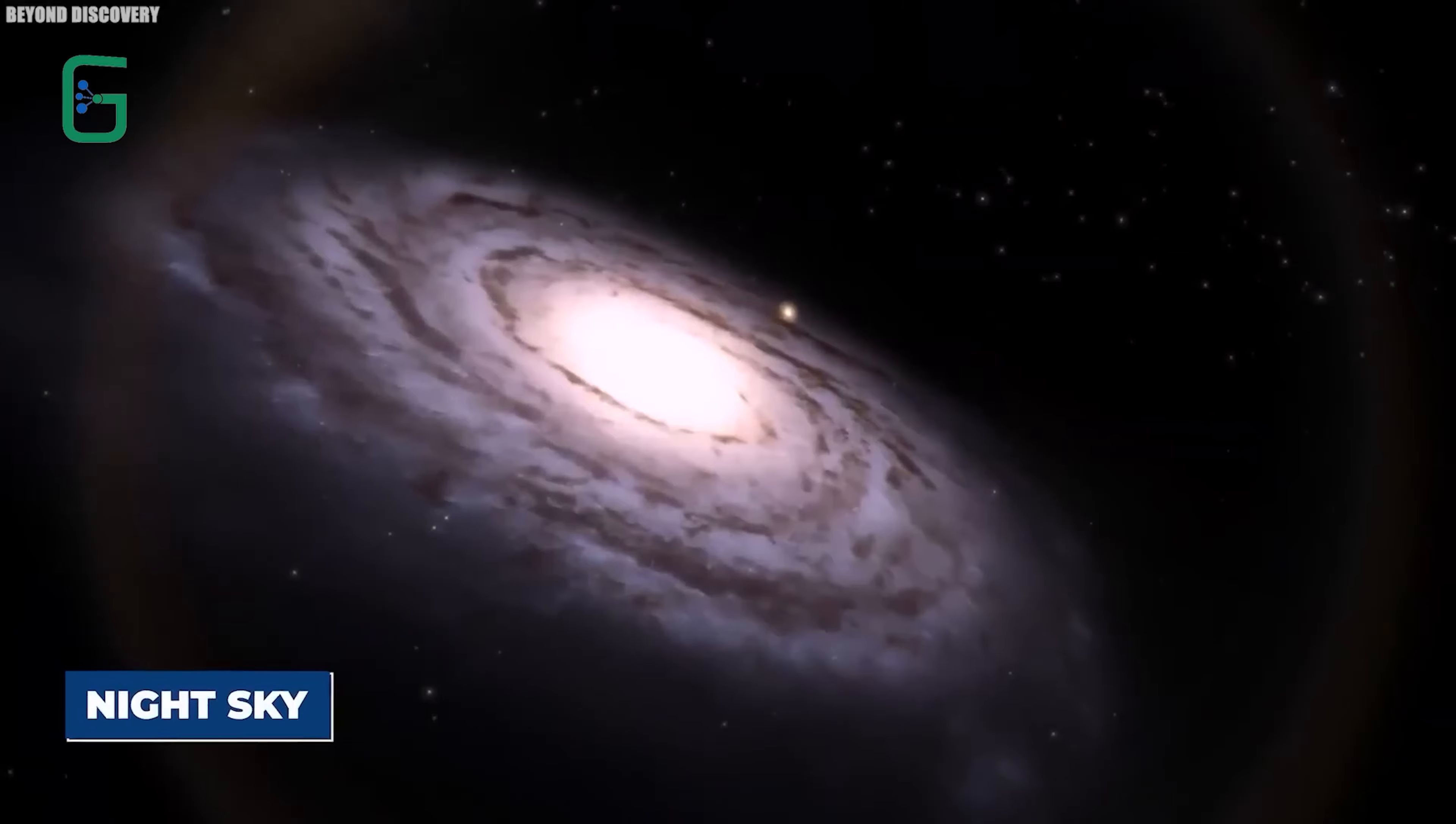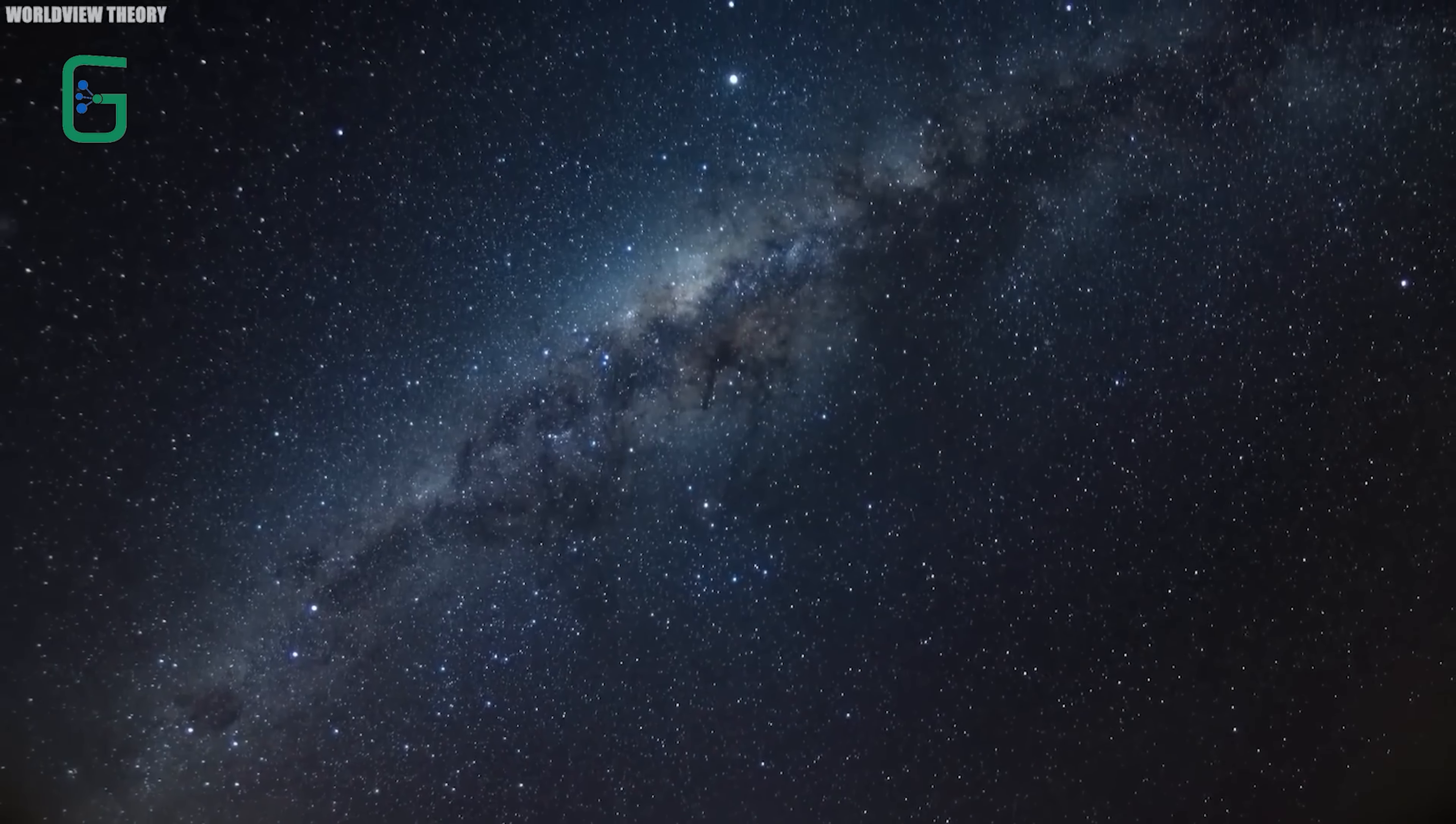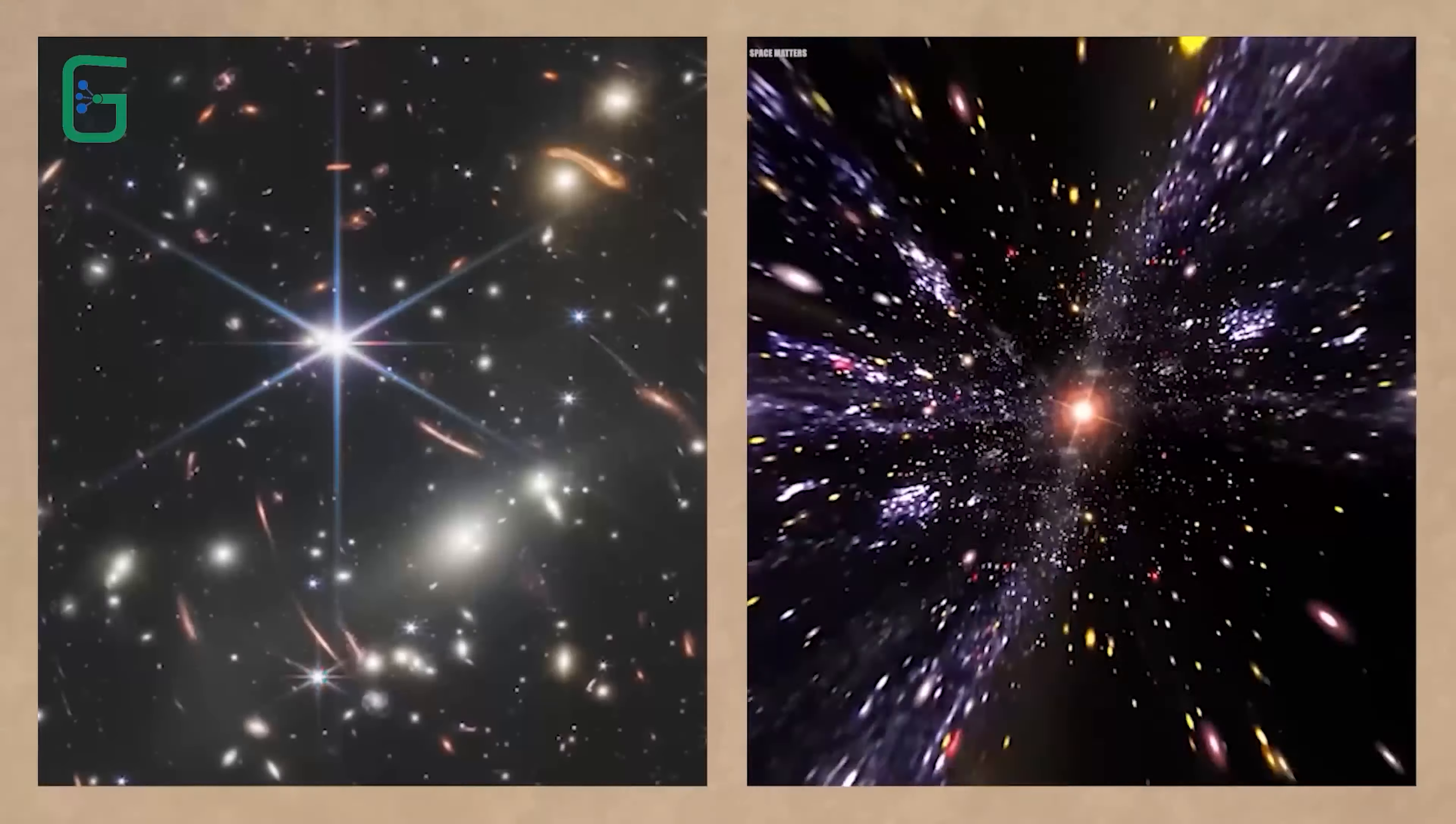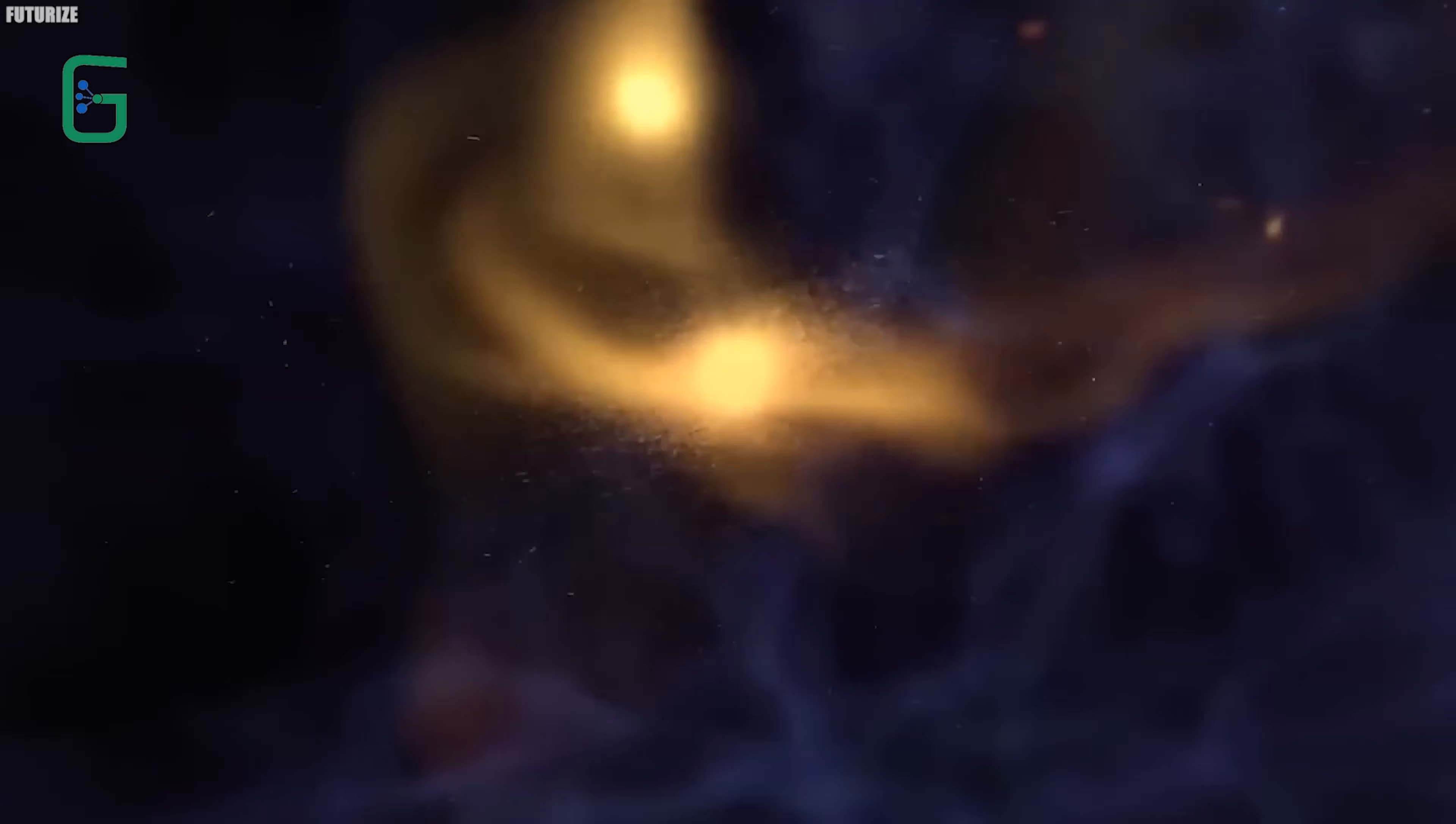Long ago, when early astronomers peered into the night sky, they saw the Milky Way as one big blob of light. They didn't have fancy tools to see individual stars. But along came Galileo Galilei with his telescope in the 17th century. He showed them that the Milky Way is a collection of countless stars. This blew people's minds and made them wonder if there was more out there.